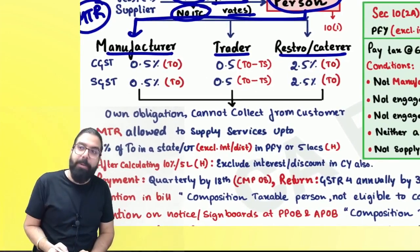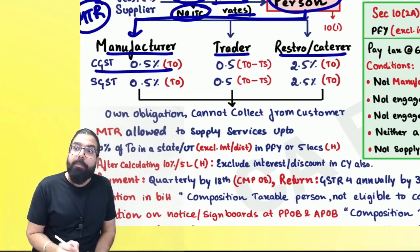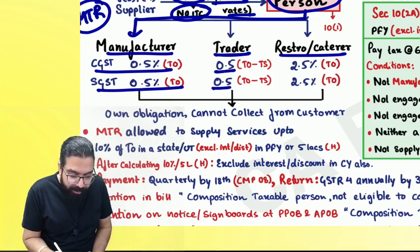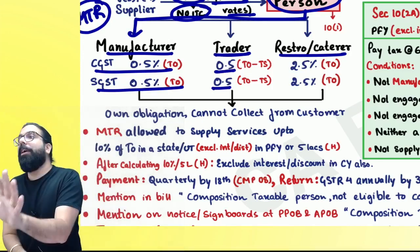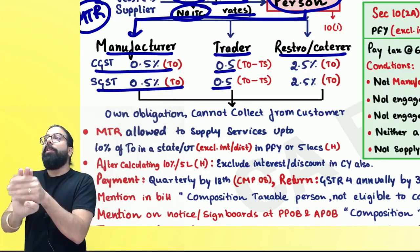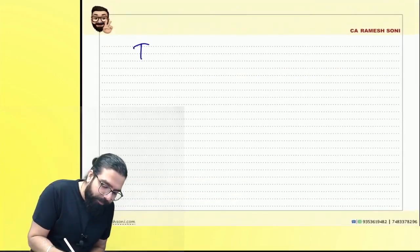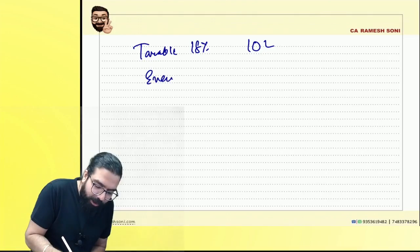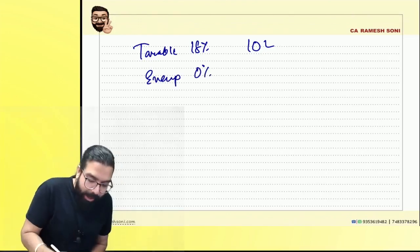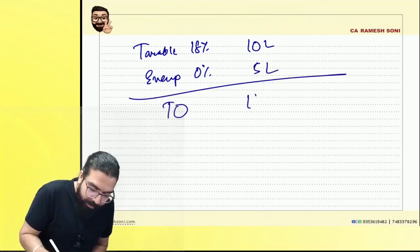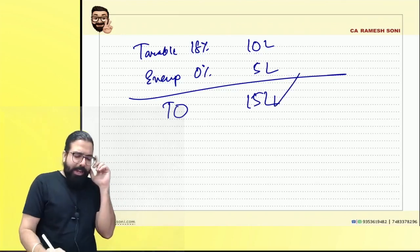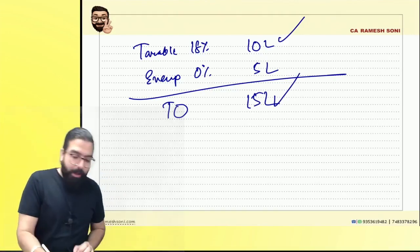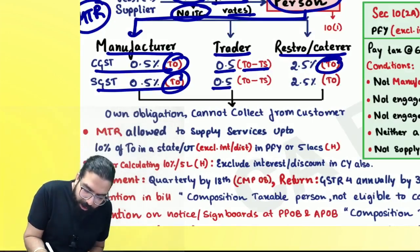A manufacturer always pays GST at 0.5% CGST and 0.5% SGST of the total turnover in the state. A trader pays 0.5% + 0.5% — but not of total turnover, of taxable turnover on which GST applies. For example: if taxable turnover is 10 lakh and exempt turnover is 5 lakh, total is 15 lakh. A manufacturer pays on 15 lakh; a trader pays on 10 lakh; a restaurant pays on 15 lakh turnover.